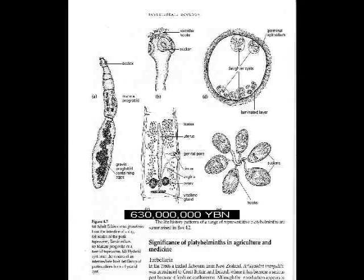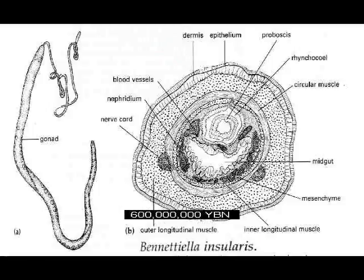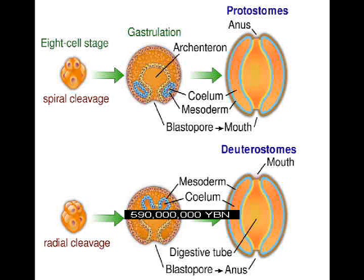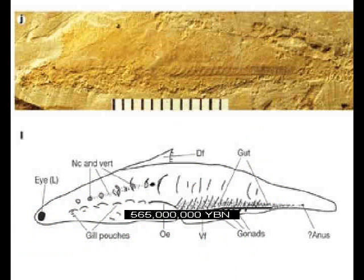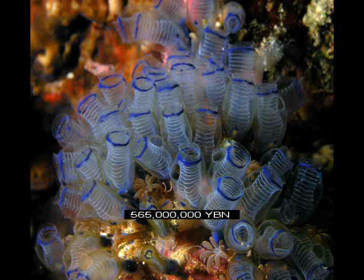Vagina, uterus, and genital pore. Penis. Red blood cells and blood vessels. Protostomes — ancestor of all arthropods, brachiopods, and mollusks. Deuterostomes — ancestor of acorn worms, starfish, and all chordates. Chordates — ancestor of all tunicates, fish, amphibians, reptiles, mammals, and birds.